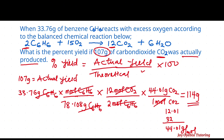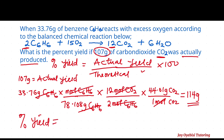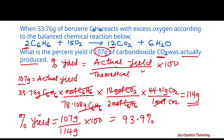We now have our theoretical yield — what you just calculated is the theoretical yield — and we have the actual yield. To calculate the percent yield, plug in the actual yield which is 107 grams over the theoretical yield which is 114 grams, times 100. The final answer is 107 divided by 114 times 100, maintaining three significant figures.